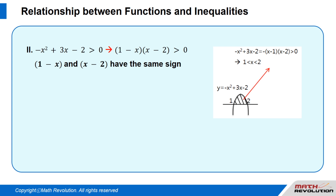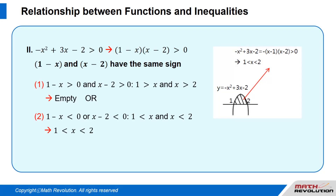(1 minus x)(x minus 2) is greater than 0 means that the factors (1 minus x) and (x minus 2) have the same sign. That is: 1 minus x is greater than 0 and x minus 2 is greater than 0, or 1 minus x is smaller than 0 and x minus 2 is smaller than 0. This means: 1 is greater than x and x is greater than 2, or 1 is smaller than x and x is smaller than 2.